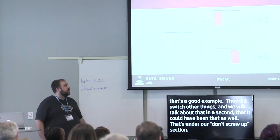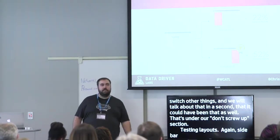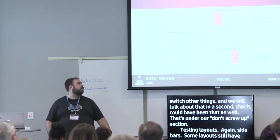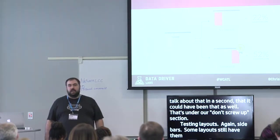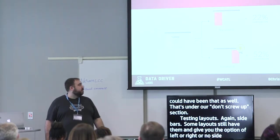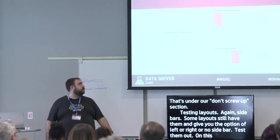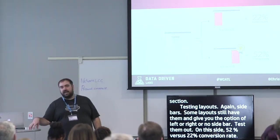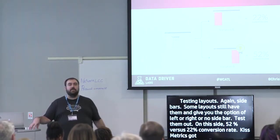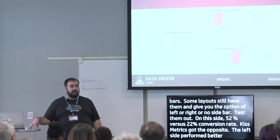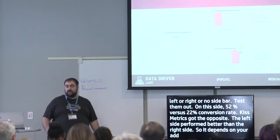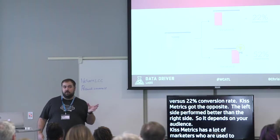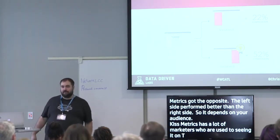Testing layouts — sidebars, for example. Some themes give you the option for the sidebar on the left, right, or no sidebar at all. Test those out. In one example, a sidebar on the right gave 52% versus 22% conversion rate. But interestingly, the Kissmetrics blog ran the same test and got the opposite result — the left side performed way better. It really just depends on your audience. Run the test and see.